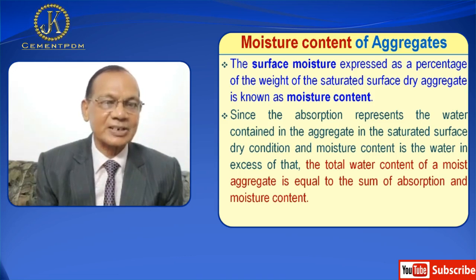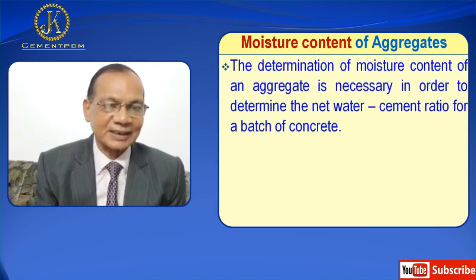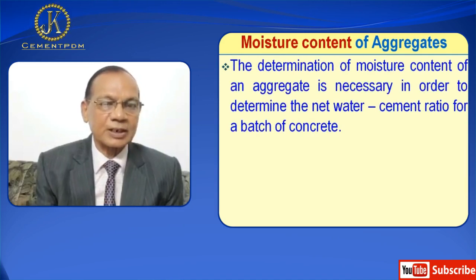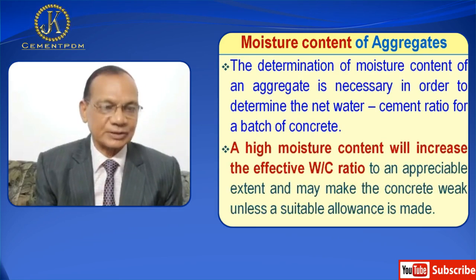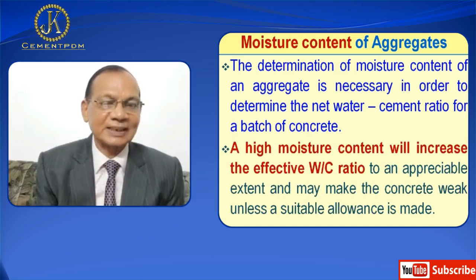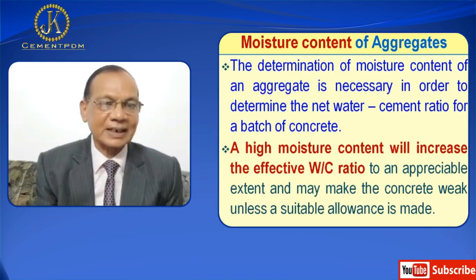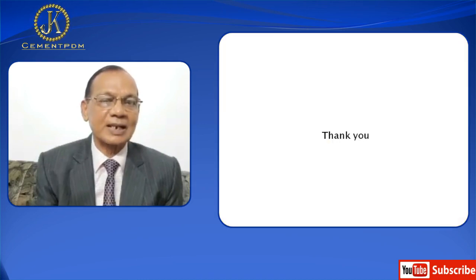The total water content of a moist aggregate is equal to the sum of absorption and moisture content. The determination of moisture content of an aggregate is necessary in order to determine the net water-cement ratio for a batch of concrete. A high moisture content will increase the effective water-cement ratio to an appreciable extent and may make the concrete weak unless a suitable allowance is made.